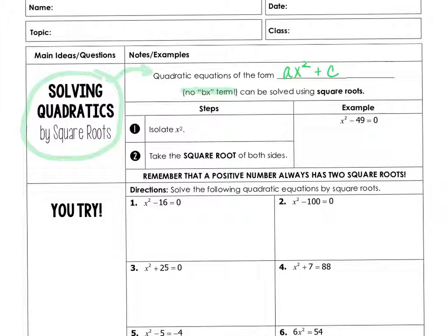So those can be solved using square roots. Now it doesn't mean this is the only method, for some factoring could also work, and you're going to see that on some of these examples. But you will see a situation where solving by square roots is really probably the only option.